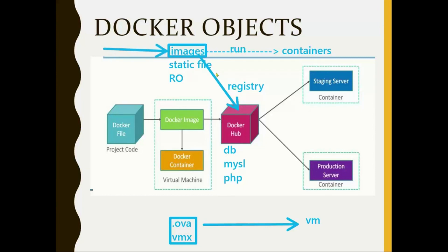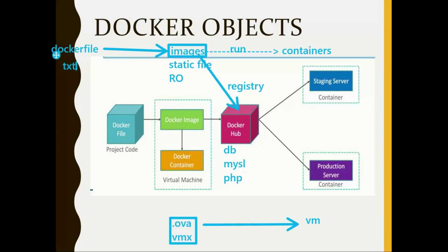Whether it's an official image or your own image, every Docker image is created from a Dockerfile. Official images are already created by Docker and stored on Docker Hub for public use. If you want your own image for your company or enterprise application, you create it through a Dockerfile. A Dockerfile is simply a text file containing Docker instructions.